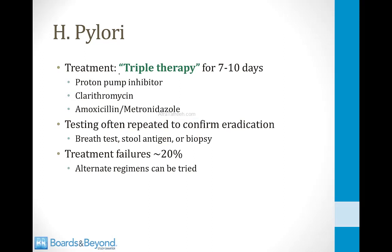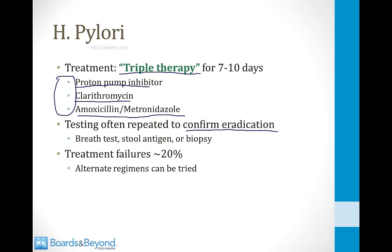The classic treatment for H. pylori infection is triple therapy, as the bacteria responds poorly to any single antibiotic. It consists of a proton pump inhibitor, plus an antibiotic like clarithromycin, plus either amoxicillin or metronidazole. This combination is most effective for eradicating the bacteria. Testing is performed afterward to confirm eradication — via breath test, stool antigen, or biopsy — since asymptomatic infection can progress to chronic gastritis and potentially cancer. About 20% of the time triple therapy doesn't work, requiring alternative regimens.